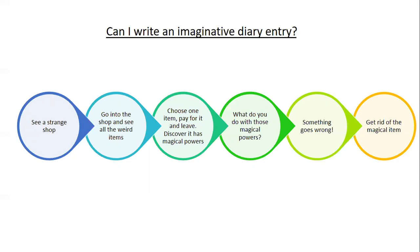Most of these bits you've kind of written anyway — you've written about going into the shop and seeing all the items, the magical powers, something going wrong, and getting rid of it. So don't forget to look back through your book and use loads of that stuff you've already written. It's quite long what we're writing today, but that's because you've already written quite a lot of it. I'm going to break it down and show what I've put for each of the six sections.